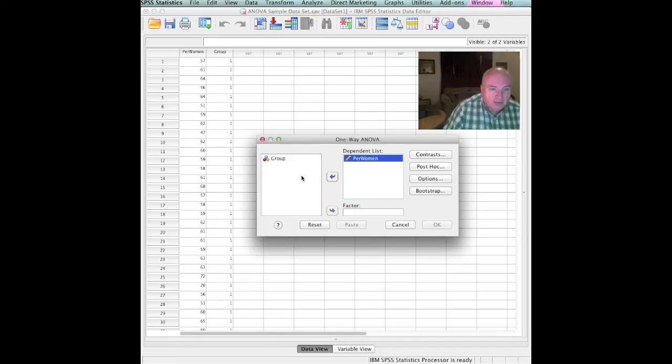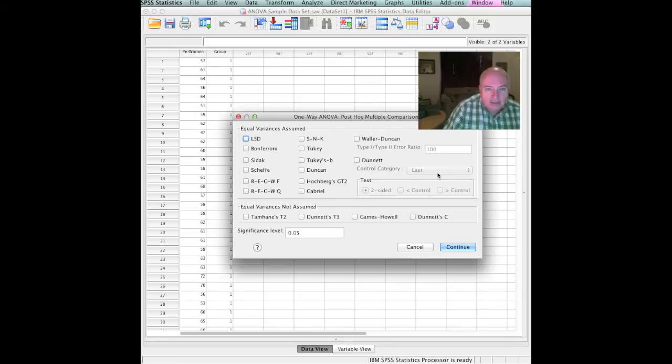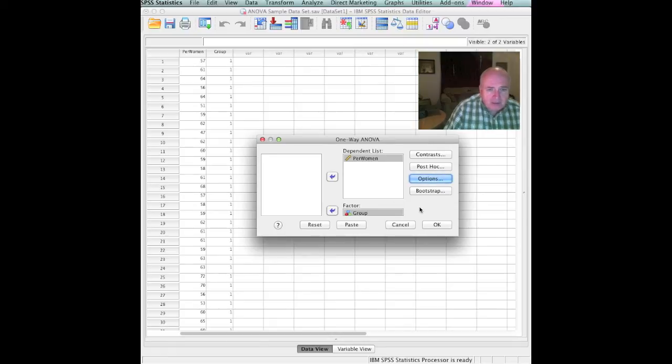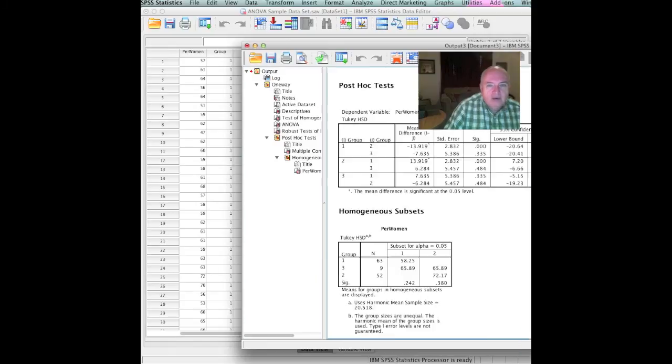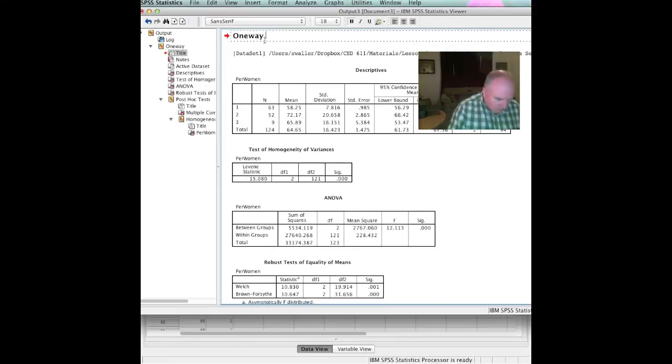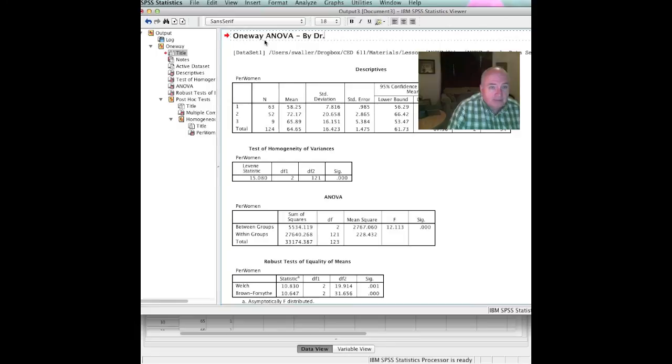What is our dependent variable to percent? Women. Our factor is group. And we need to look at our post-hoc. We're going to select the Tukey post-hoc test options. We want the descriptions. We want the homogeneity of variance test. And let's run a Brown Forsyth and a Welch. Both of these, the Brown Forsyth and the Welch, will do this analysis assuming that the homogeneity of variance is not met. And that will help us a little bit. OK. We press OK. And away we go. Now we have that level of readout. And one-way ANOVA. And we're going to do by Dr. Dog.